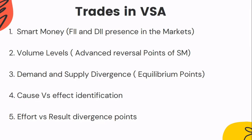Now the final concept: how to take trades in VSA. Many people might think that once you find a divergence or a reversal point, you can immediately take a buy or sell trade. Definitely not — don't make that mistake. In VSA, we go through a lot of confirmations before taking an entry. These entries are very high probability, with around eight or nine out of ten trades hitting their targets. The first thing to look for in the markets is smart money activity — the FIIs and DIIs present in the markets.